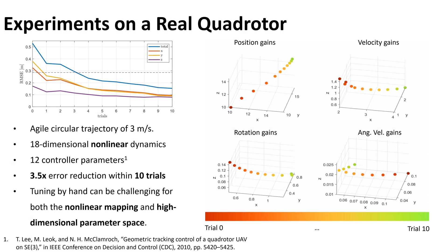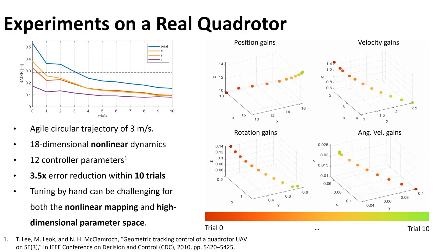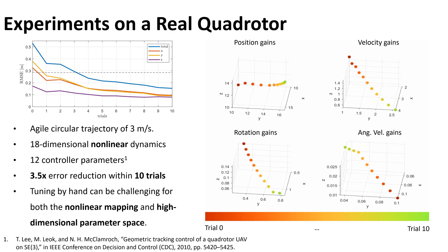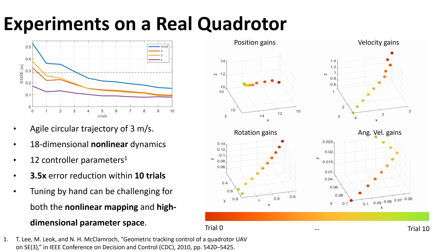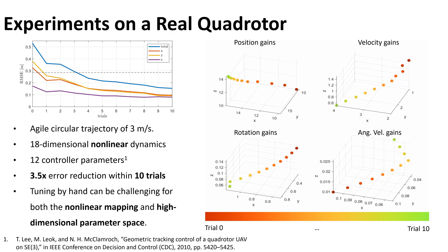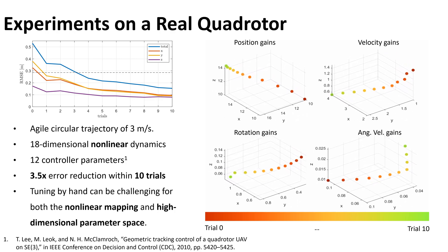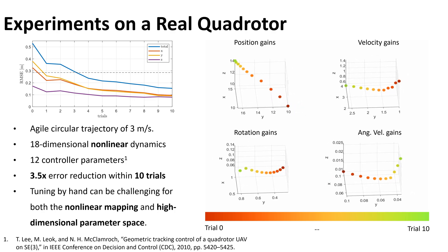We test DiffTune in experiments, where we tune a quadrotor controller to track an agile circular trajectory. DiffTune is able to reduce the tracking error by 3.5 times in only 10 trials. The animation on the right shows how the 12 parameters were adjusted in the 10 trials.